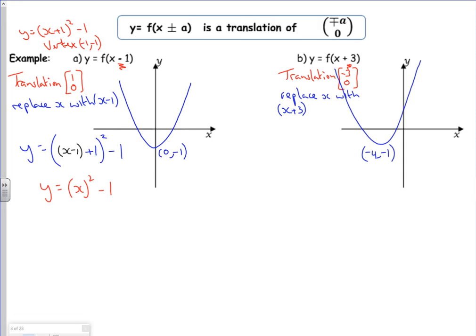My equation would become y equals, so x is replaced with x plus 3. Then I've got my plus 1, all squared minus 1. So I've got y equals, if I tidy up, x plus 4, all squared minus 1. And that matches that the vertex is minus 4, minus 1. Now, I said I'd track where the y-intercept went. So if I imagine that x is 0, I've got 4 squared is 16. Take 1 is 15.